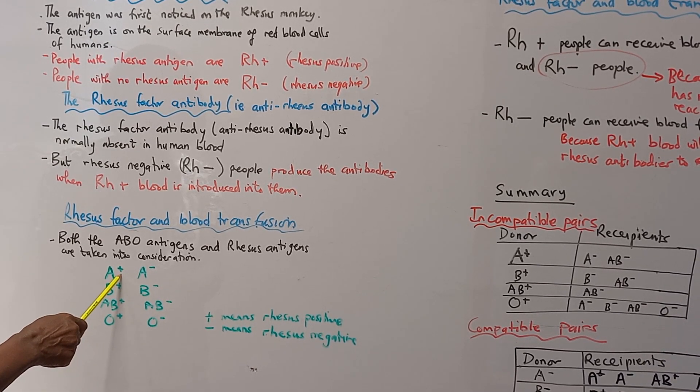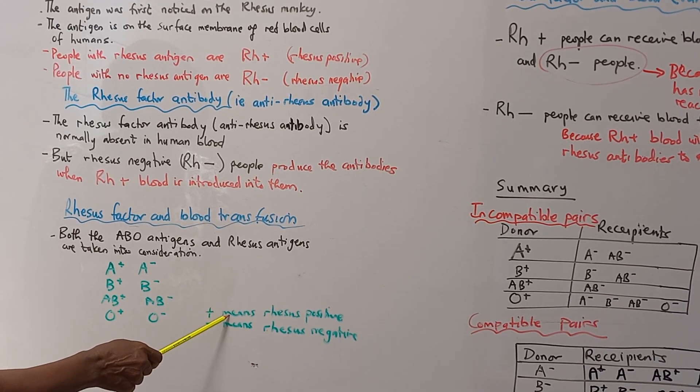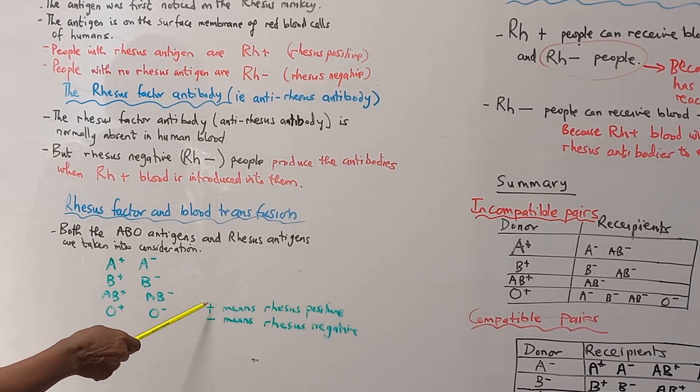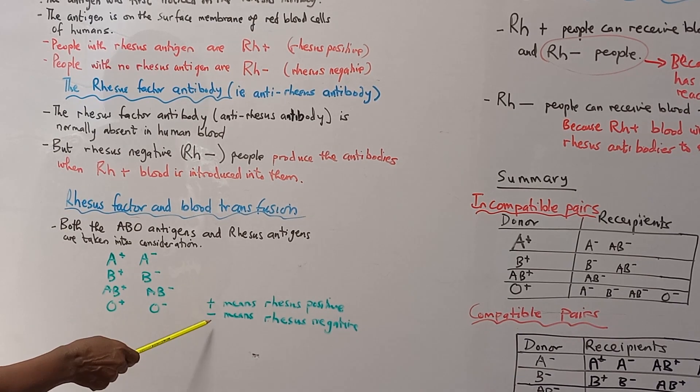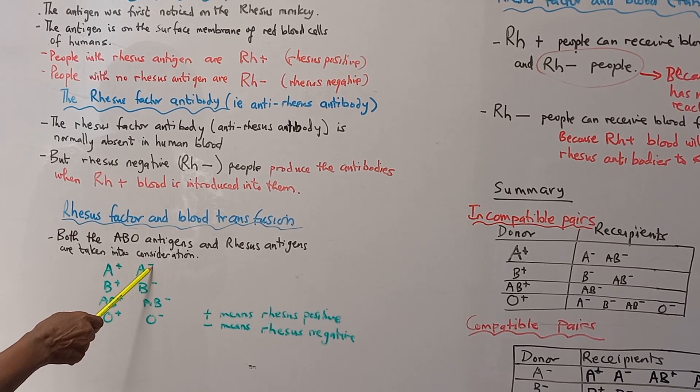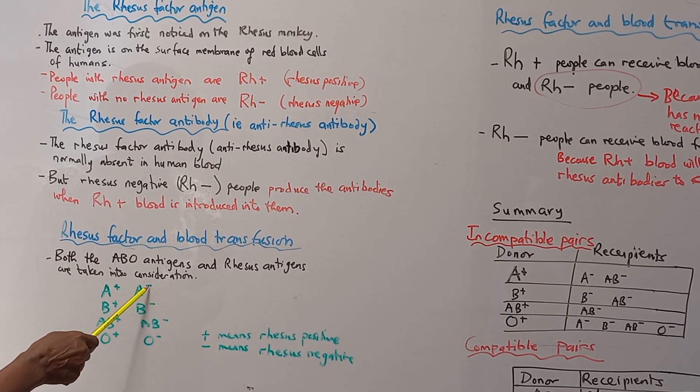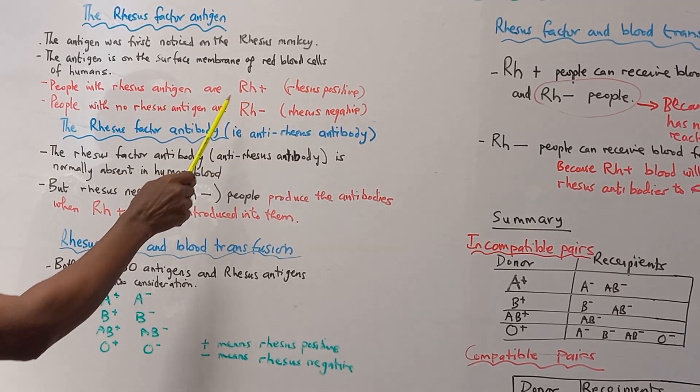The positive sign means the person is blood group A and has Rhesus positive. The negative sign means the person is blood group A, but it's A minus because it's blood group A but Rhesus negative.